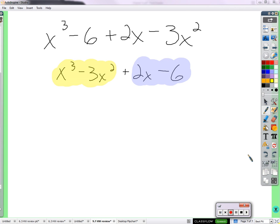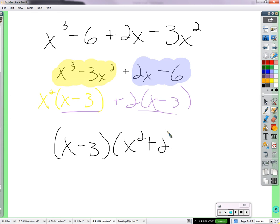So I've rewritten them in order of the exponents, the biggest exponents, working my way down through the highest exponents. And this group has what in common? X squared. X squared times x minus 3. And these two? They have two. Two times x minus 3. We factored out that two. And we're left with x minus 3 factors in both. Which factors as x minus 3 times x squared plus 2.